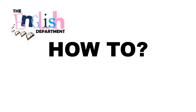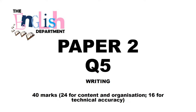Welcome to this how-to video by the English Department. Today we're going to be looking at Paper 2 Question 5, which will ask you to write in a persuasive or argumentative style. It is worth 40 marks: 24 for content and organisation and 16 for technical accuracy. It is the same mark scheme as Paper 1 Question 5, so you need to have the same standard of accurate and varied sentence structures and punctuation.